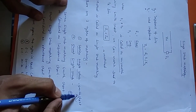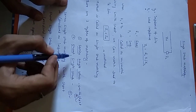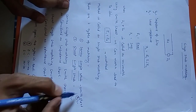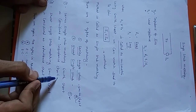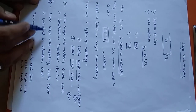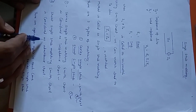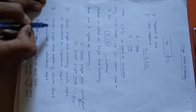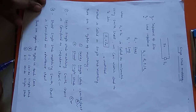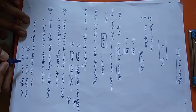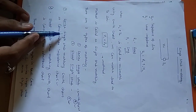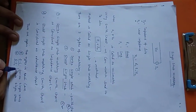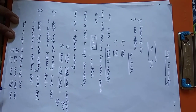For series single stub matching, the Smith chart behaves as an impedance chart, and for shunt single stub matching, the Smith chart behaves as an admittance chart. Further, series and shunt are both divided into two types depending upon whether the stub is open-circuited or short-circuited. So for series single stub matching, we have two types: open-circuit series single stub and short-circuit series single stub.